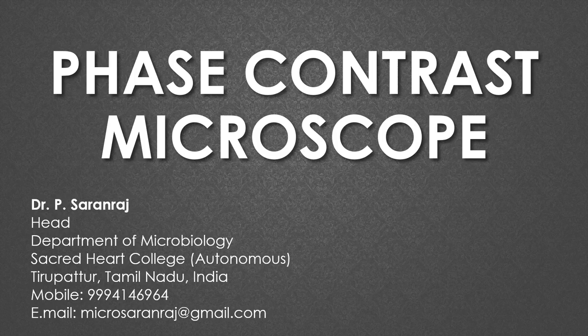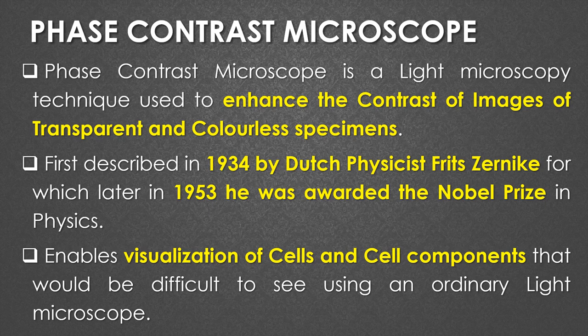In this video we are going to see about the phase contrast microscope. The phase contrast microscope is a type of light microscopy technique which is used to enhance the contrast of the image of transparent and colorless specimens. This phase contrast microscope was first described in the year 1934 by the Dutch physicist Fritz Zernike, and later in 1953 for his discovery of the phase contrast microscope he was awarded the Nobel Prize in the physics category.